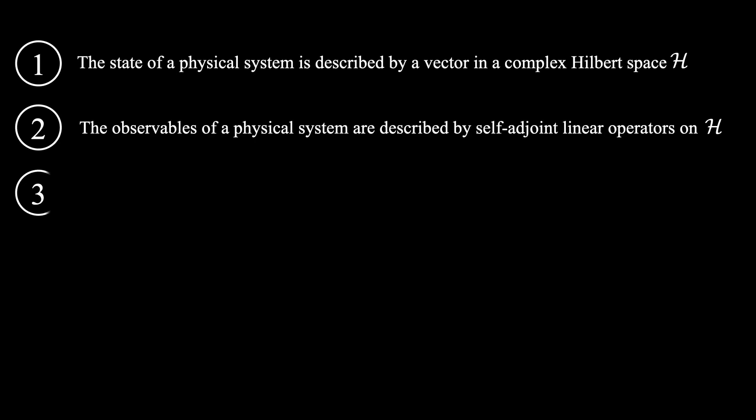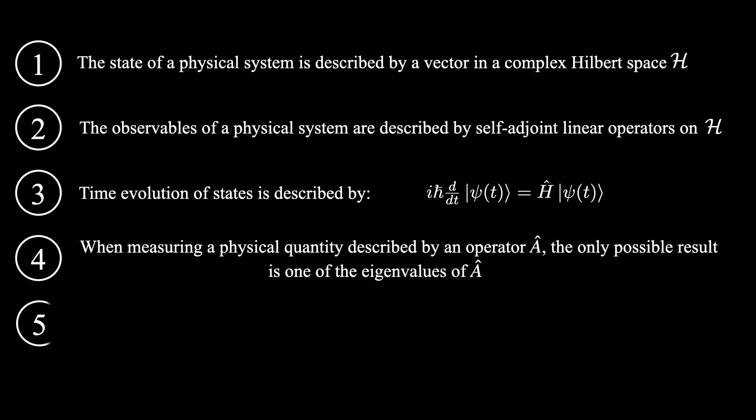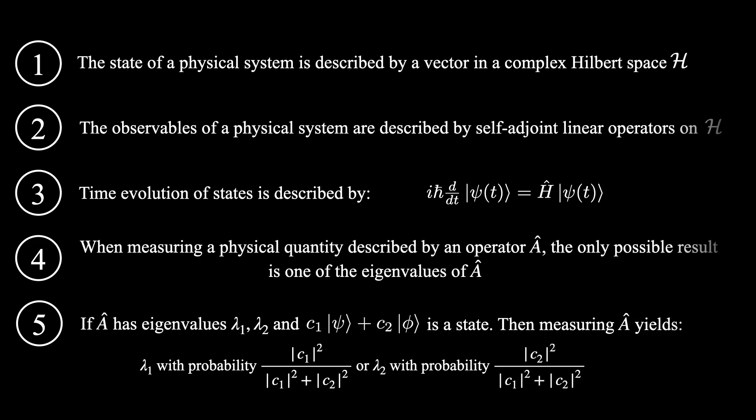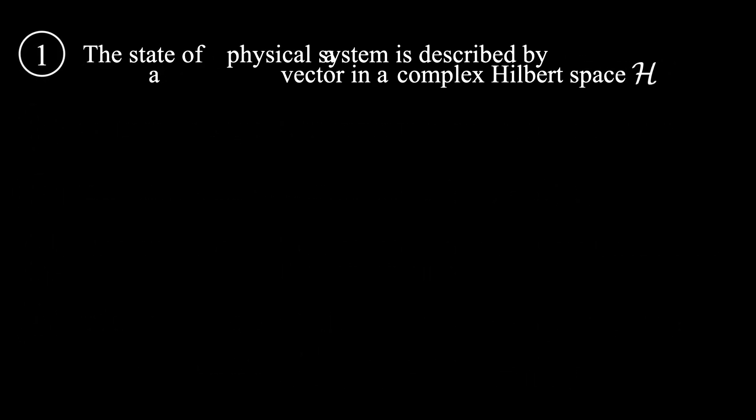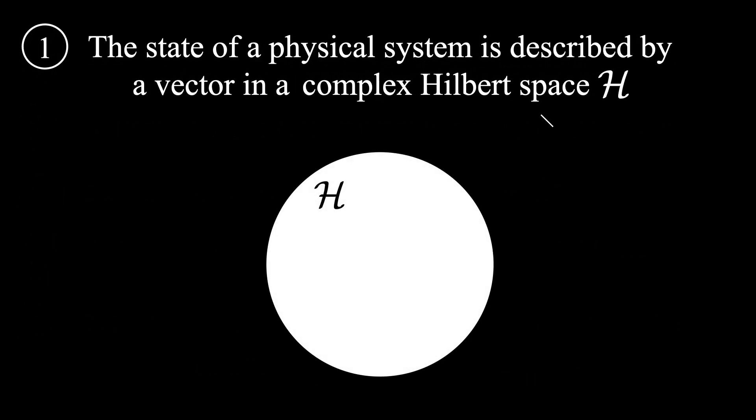In the first video in this playlist, I described the five axioms or postulates of quantum mechanics. When explaining the first axiom, I mentioned that a Hilbert space is a generalized vector space, and one that is equipped with something called an inner product.